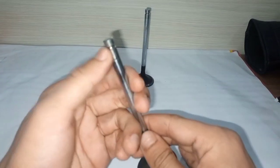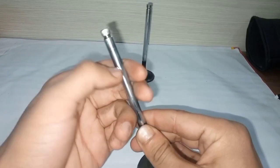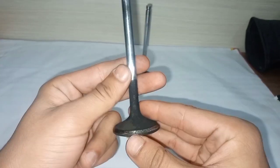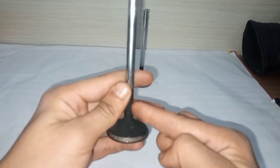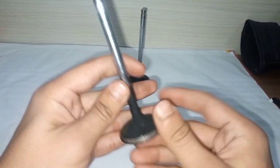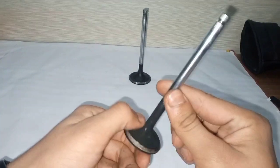The valve stem is all the way from here up to here. Then we have the valve fillet, this curved area here is known as the valve fillet.